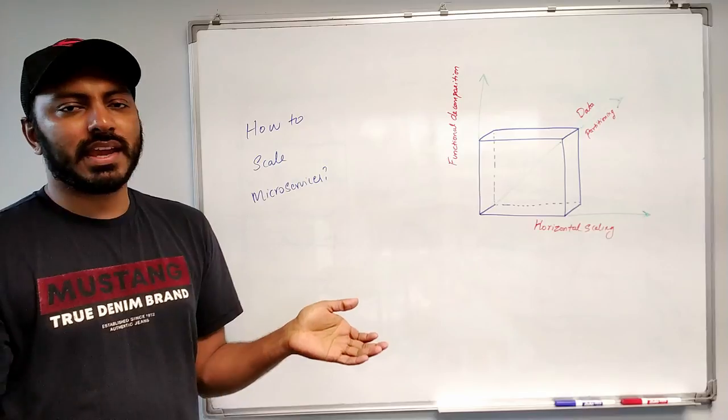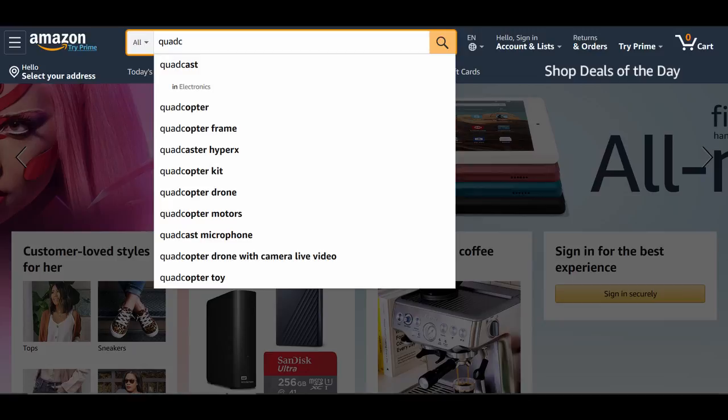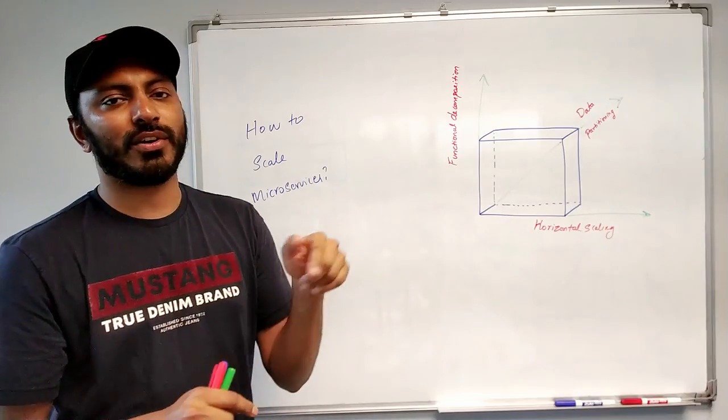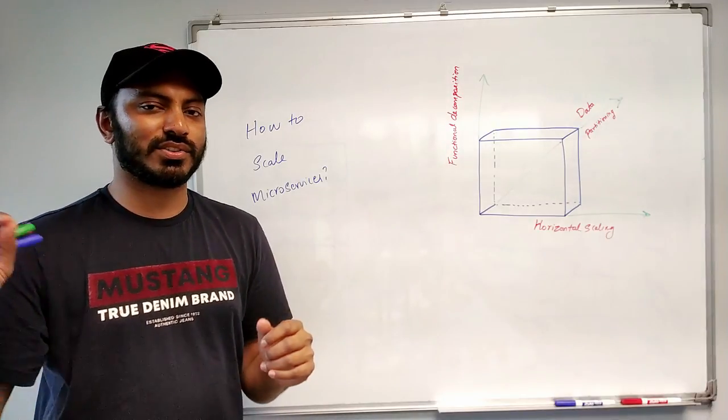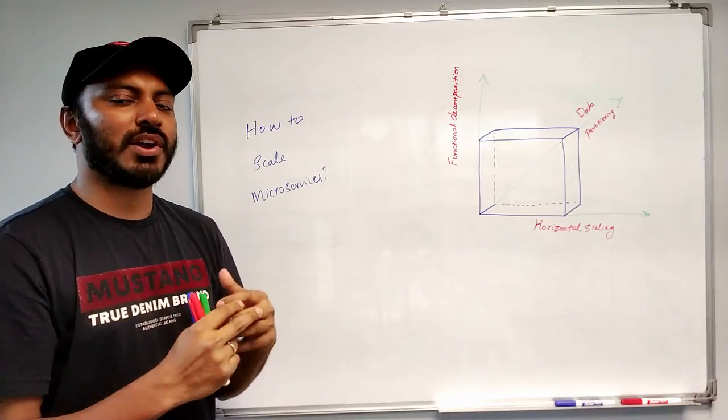Definitely in any e-commerce application, the more load usually goes to search and product page because users will be searching a lot, and then after searching for a couple of minutes they only pick one or more products, put it to the cart, and then check out. So usually the heavy load will be on the search and product.